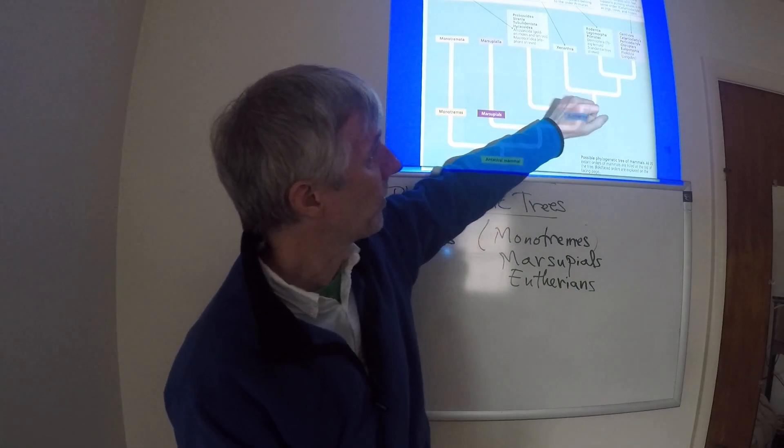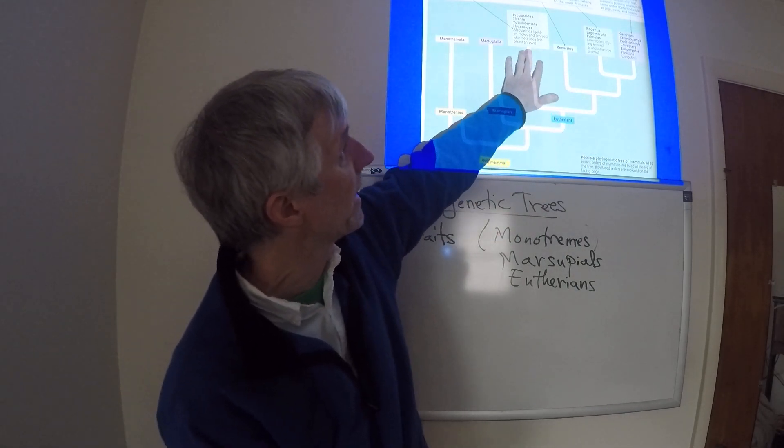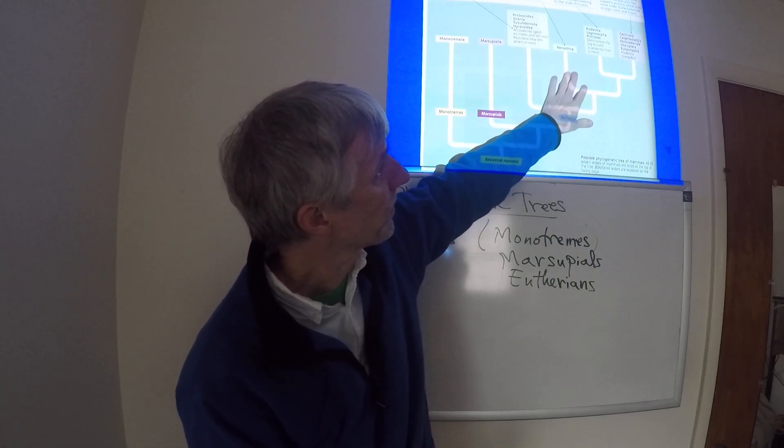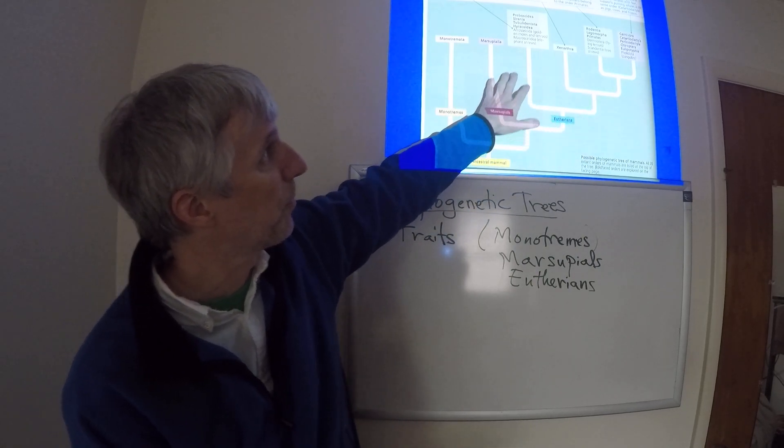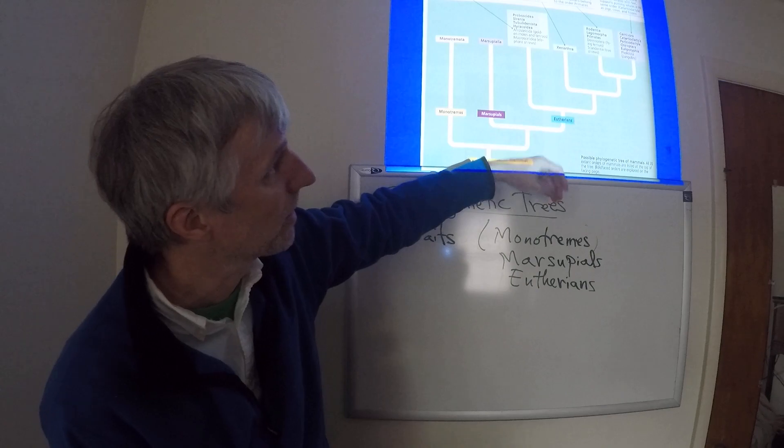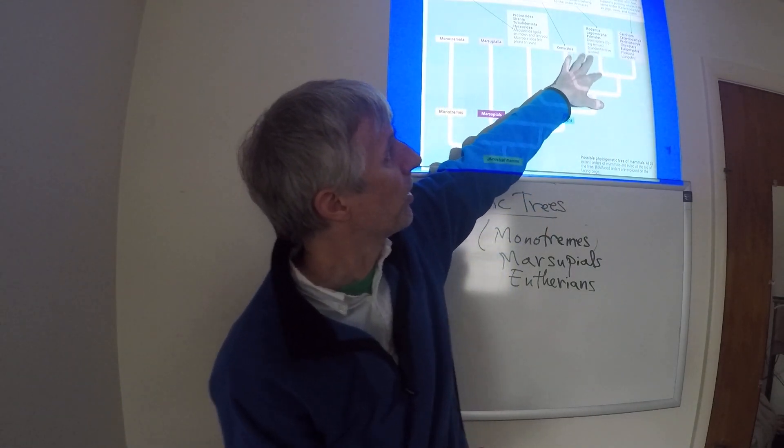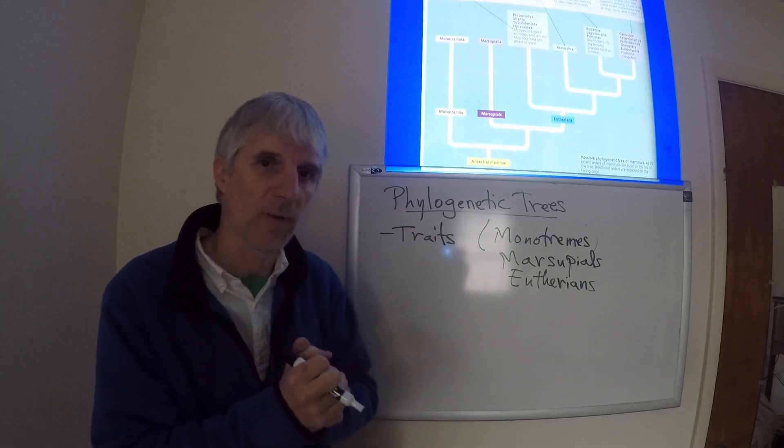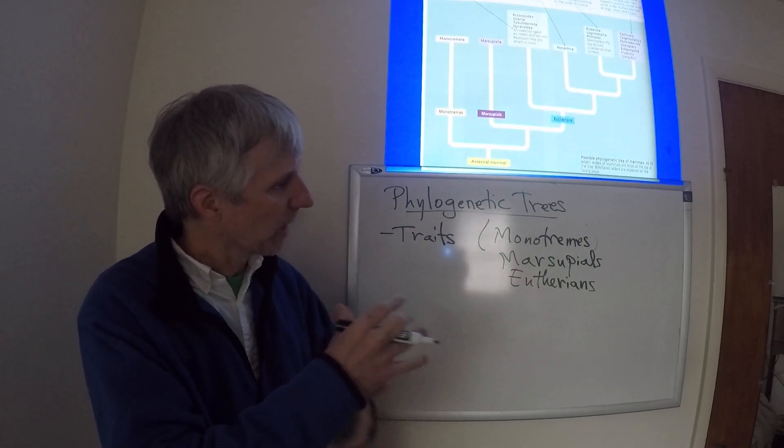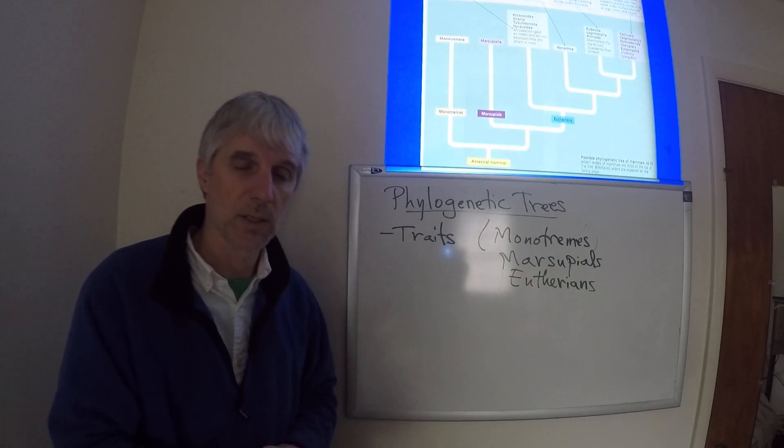And then within this group called the placental mammals, we could begin to break out distinct groups based on the traits. So, for example, the carnivores, the rodents based on tooth morphology, and we could lay out this phylogenetic tree based on traits.